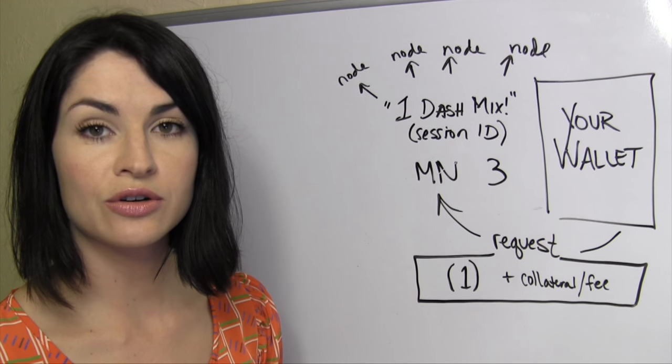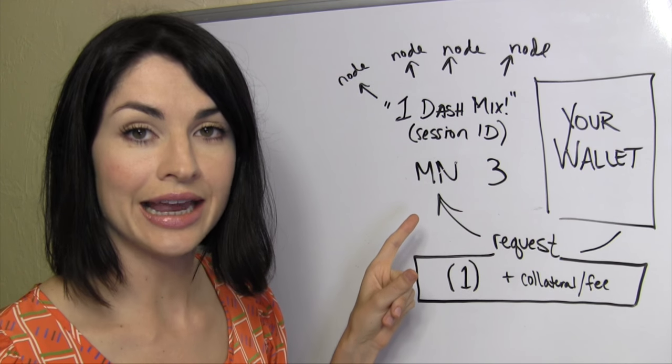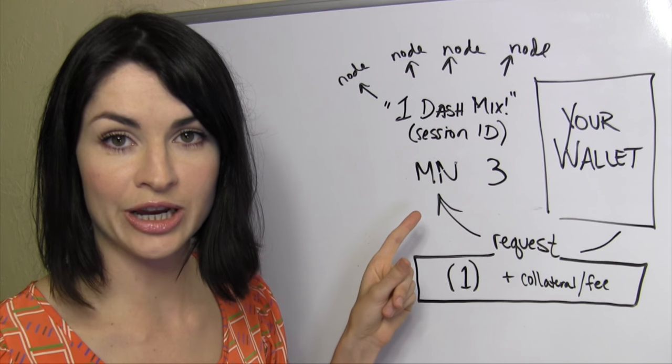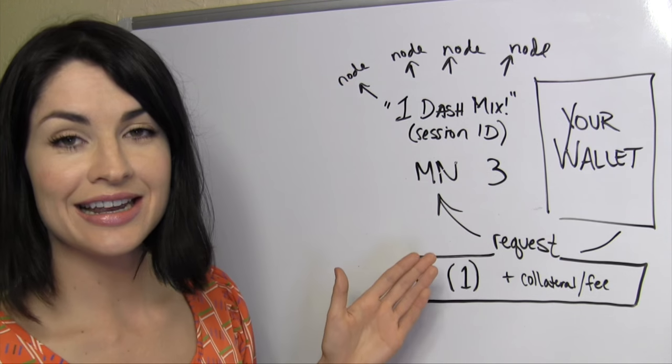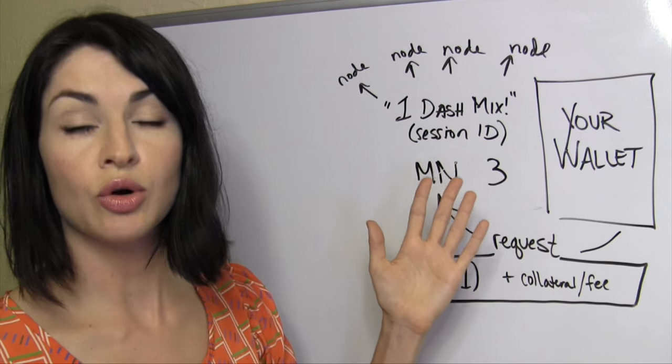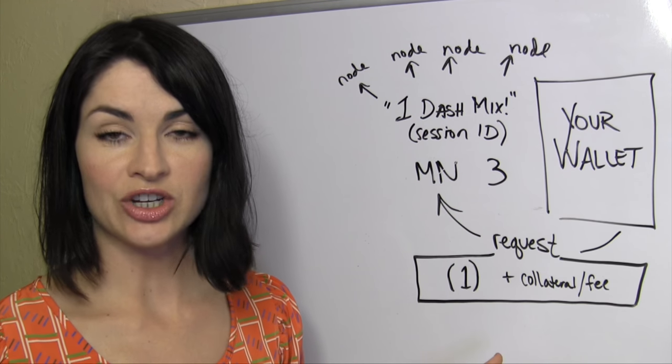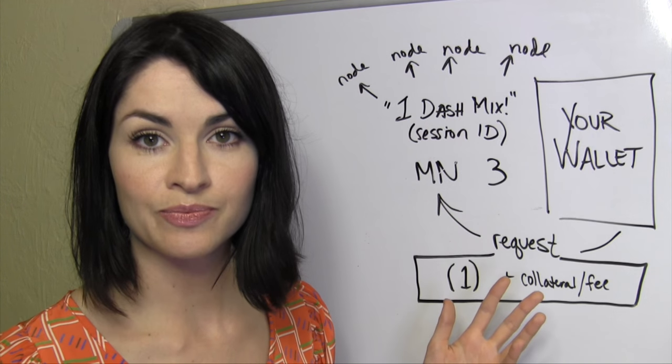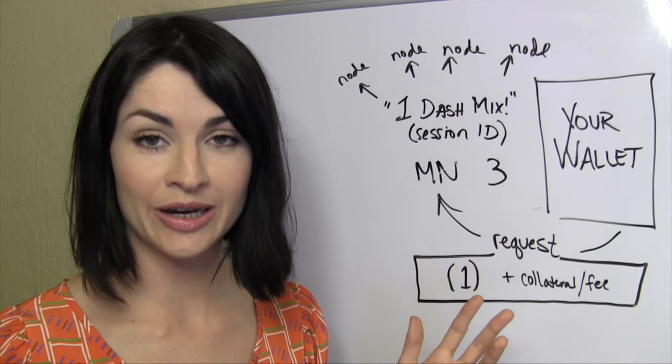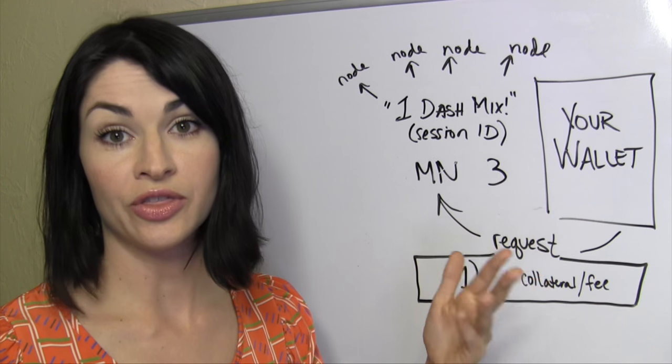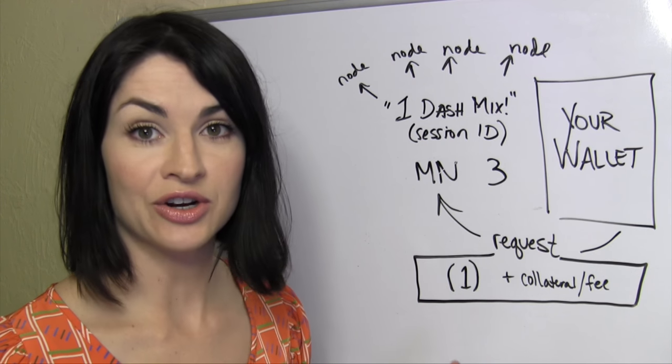The masternode then creates what's called a session ID. And this session ID contains the necessary information, basically, hey, I'm looking to mix one dash here, contains the necessary information to broadcast out to the rest of the network, so that that information can reside in what's called the mixing queue. The rest of the network, any member on it looking to mix one dash themselves, will, rather their wallet, will consult this mixing queue to see if there's a match.